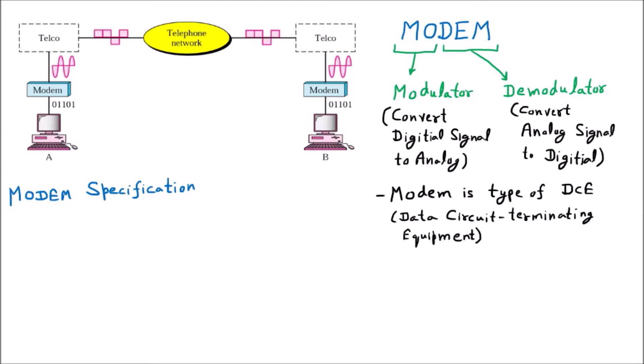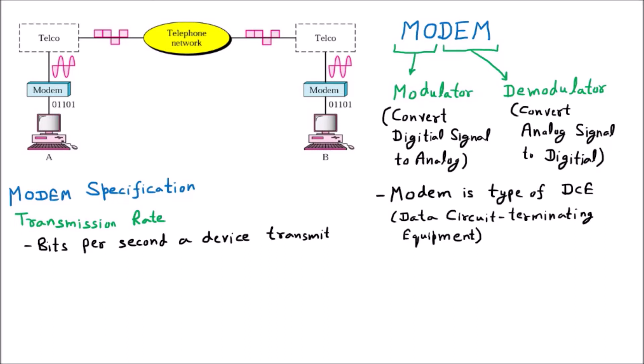The first specification is the transmission rate — that is, at what rate we are going to send data through the modem. The standard definition of transmission rate is bits per second (bps). A device such as a computer transmitting or receiving 10 bits per second means the transmission rate is 10 bps.